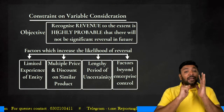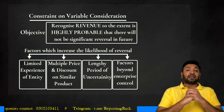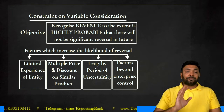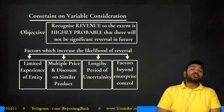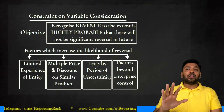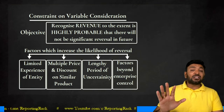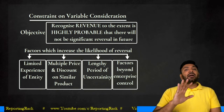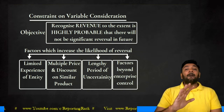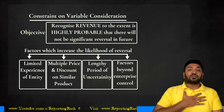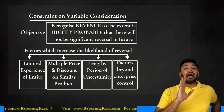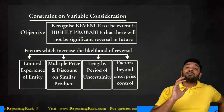That is the application of constraint on variable consideration whenever the consideration is variable upon uncertain future events. Now what are the factors which could actually influence the likelihood of reversal? First: my experience on that particular contract is very limited. I might assume I will be entitled to receive a bonus or additional payment, but because I lack experience, I will limit my transaction price to only the consideration I will receive irrespective of the time limit.